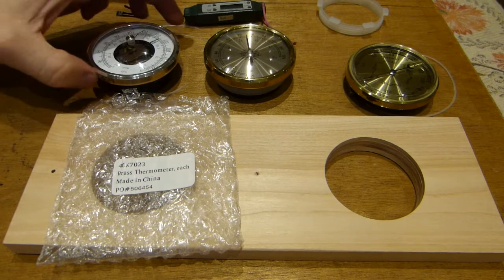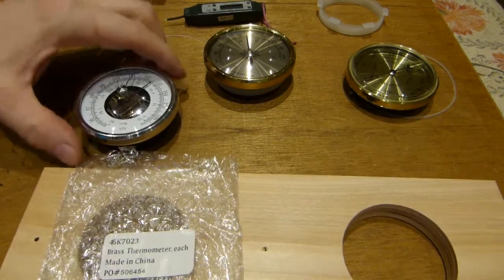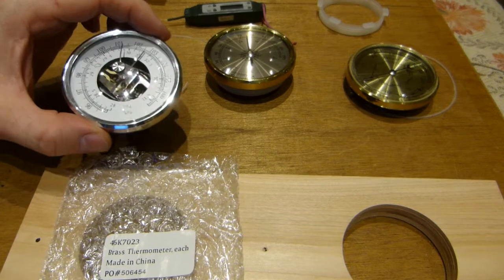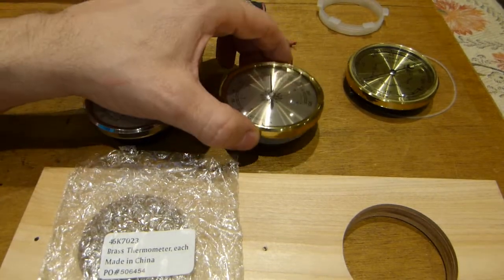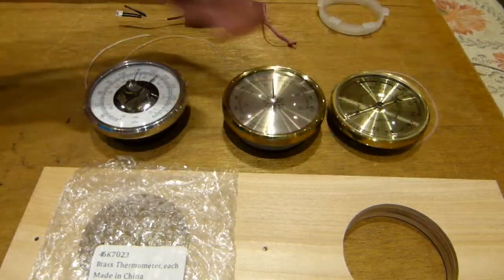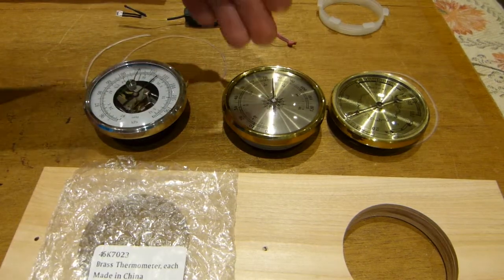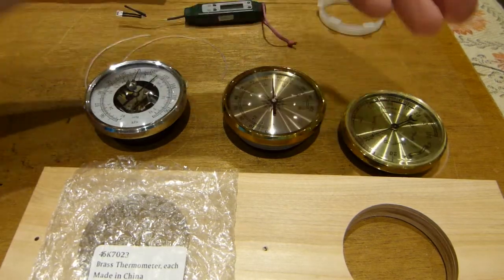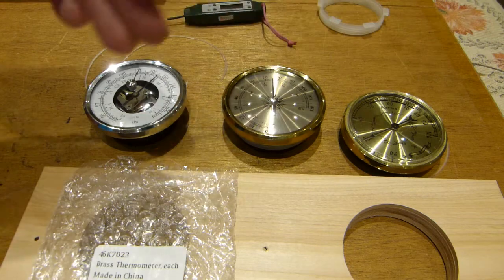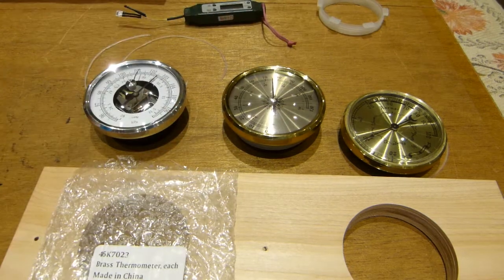Let's start at the beginning. They come with either aluminum bezel finish or brass bezel finish, and the three instruments in this case: barometer, thermometer, and hygrometer, measuring relative humidity, ambient temperature, and air pressure.